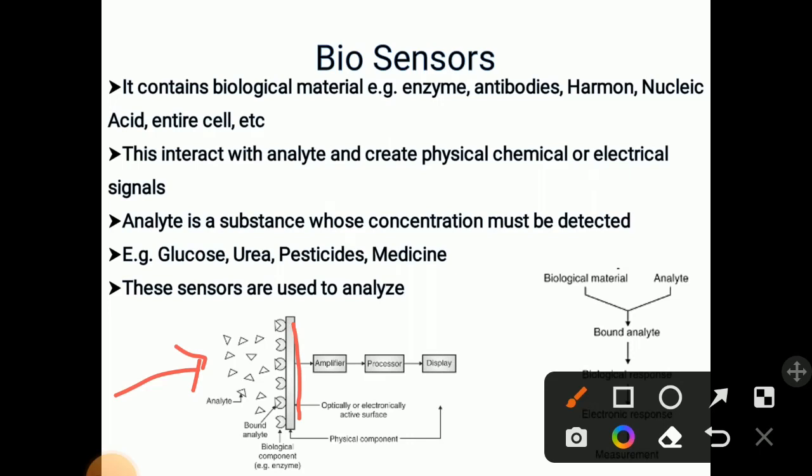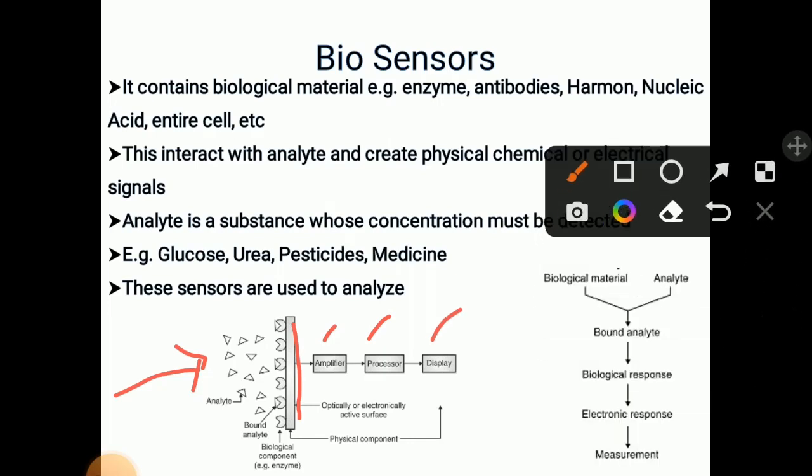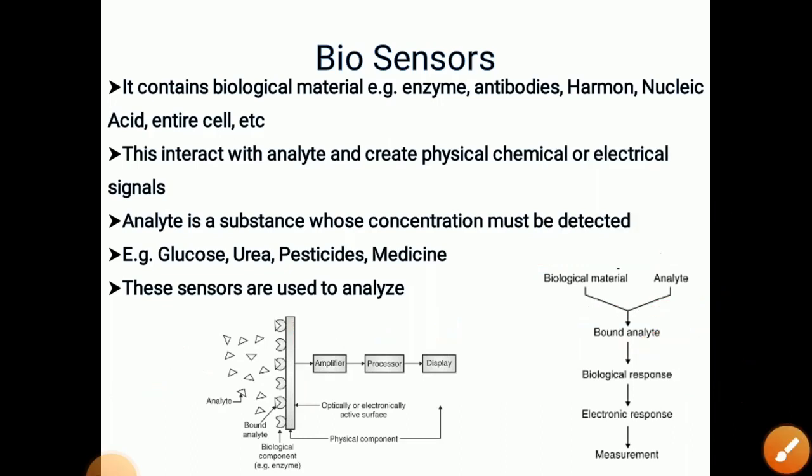Depending upon reaction between them, they generate electrical signal. This electrical signal is received by an amplifier, then given to processor and we get display. There is reaction between biological material and analyte, then bound analyte is formed, then biological response, electronic response, and then it is given to measurement. Like this, step by step process occurs.